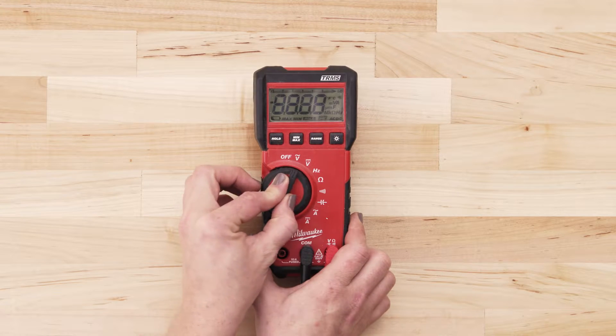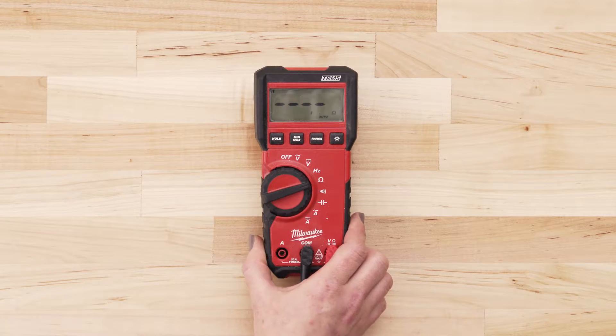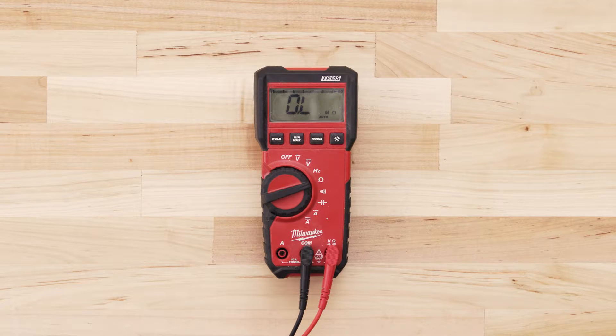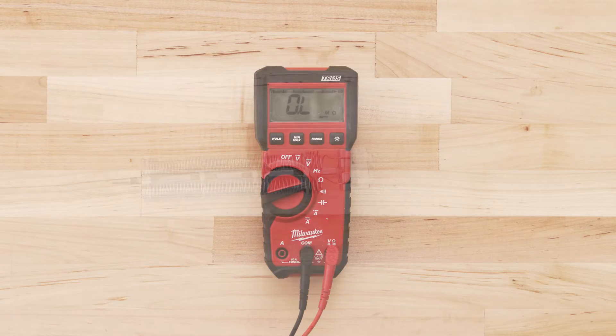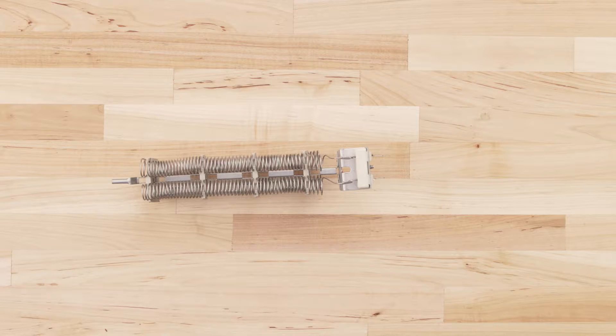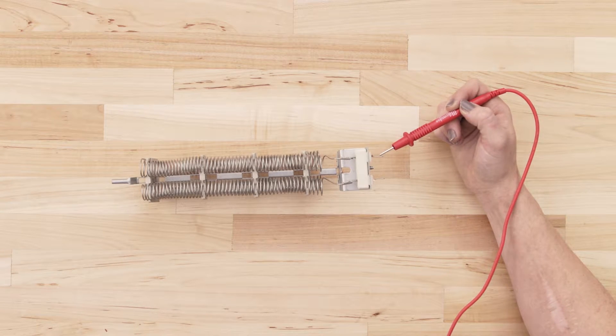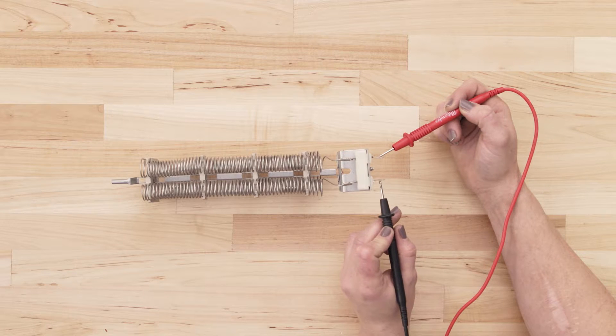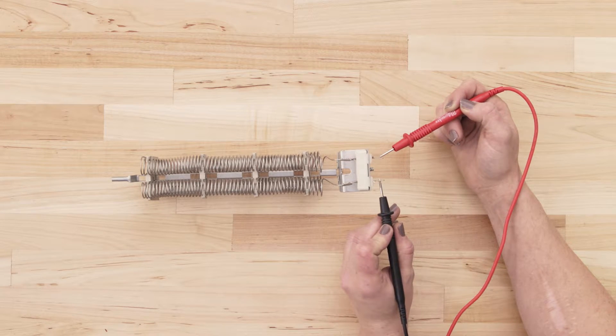If you're using a digital multimeter, also set the dial to the lowest ohms of resistance. To test for continuity, take the probe from the multimeter and touch it to one of the terminals. Now touch the second probe to the remaining terminal.